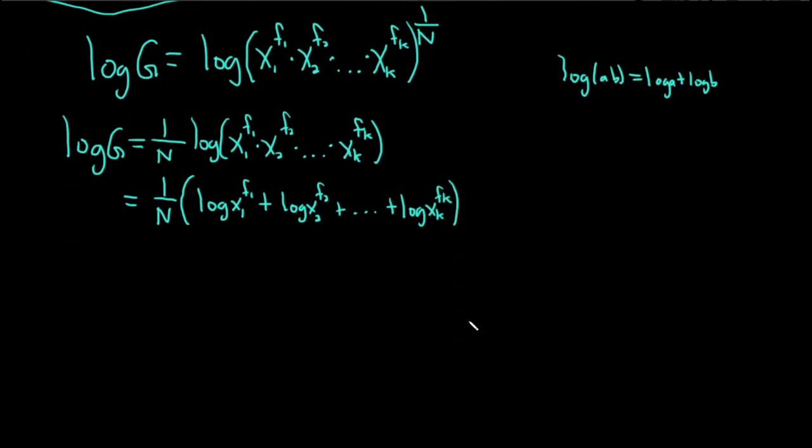Now we can use the power rule again for logarithms to put all of these frequencies in the front. We can bring them down and put them in the front every time. So this is equal to 1 over N, parentheses, the frequency f1 times the log of x1 plus the frequency f2 times the log of x2 plus dot dot dot plus the frequency fk times the log of xk.